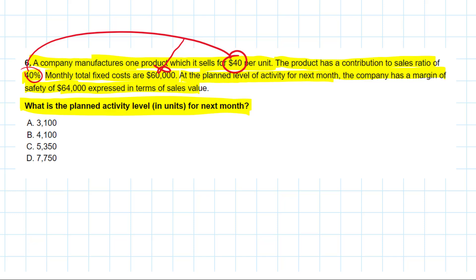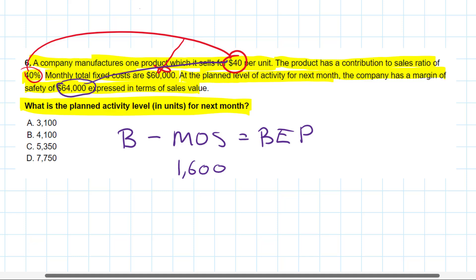So I'm going to use some formulas that I know from my studies, and then combined with some basic algebra, I can arrive at this final answer. First formula that I need is the margin of safety and the break-even point. And I know that the budgeted activity minus the margin of safety is equal to the break-even point. And I see they give me that margin of safety of $64,000. If I divide that by the selling price, I will get 1,600 units.